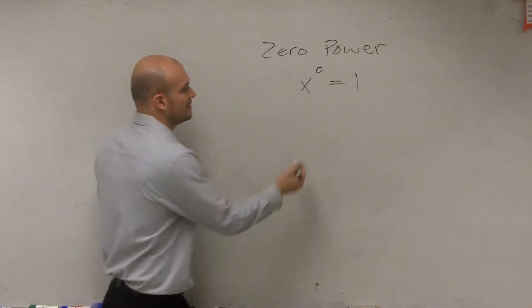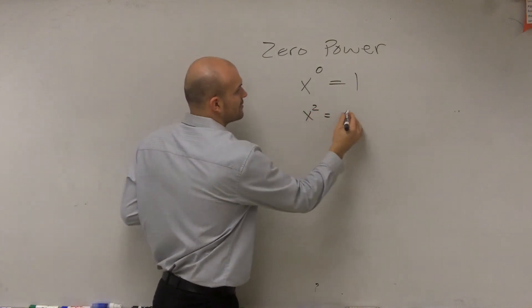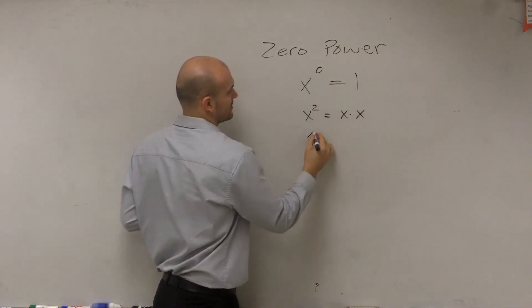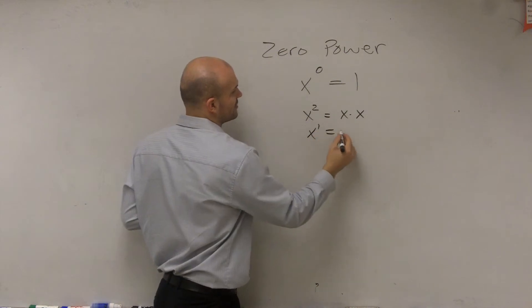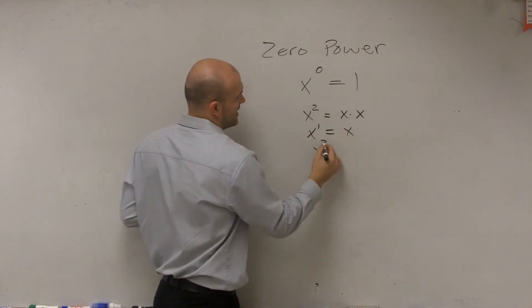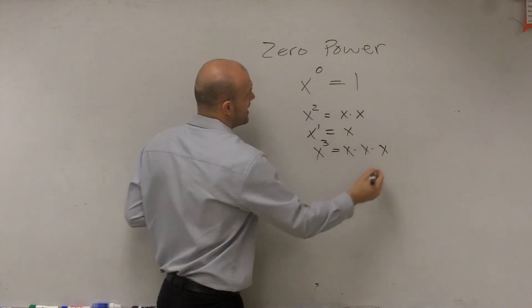Alright, and let's just go back through. If you guys know that x squared equals x times x, x to the first equals x by itself, x cubed equals x times x times x.